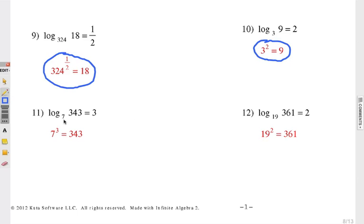Log base 7. So there's your base right there, 7. The exponent is always over here. So 7 to the third power is—this is always the value or the calculated amount—7 to the third power is 343.